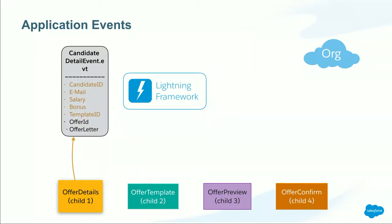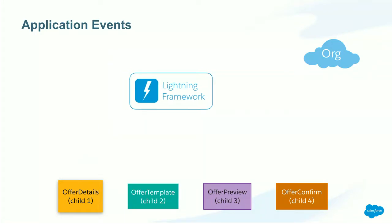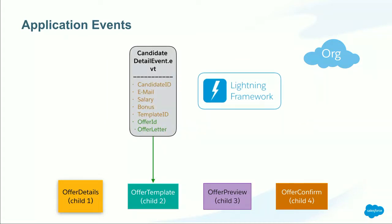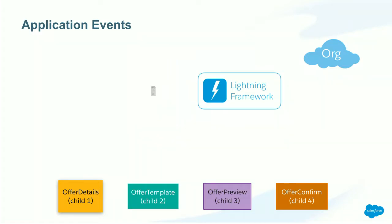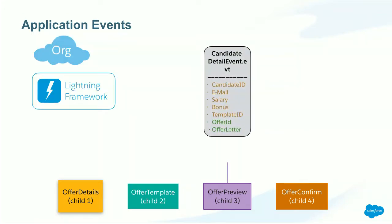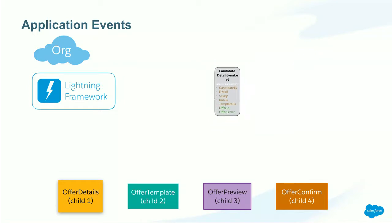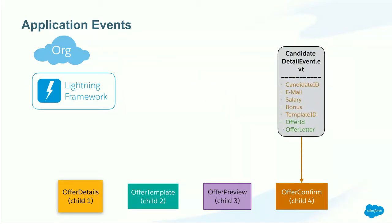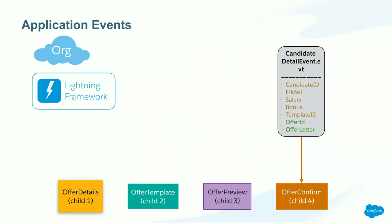Visually, the first child Lightning component in yellow grabs information from the user, instantiates the application event, populates it with what we know, and fires it. The next child Lightning component receives it because it's subscribing, grabs more information from the user, fires the event again, and so on. Notice that we haven't made a single call to the Salesforce org yet. Only when we reach the last child Lightning component in our SPA do we have the ultimate aggregated information and make a server call to send the offer letter and display the results.